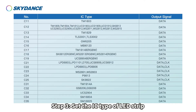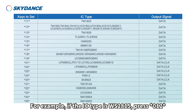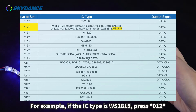Step 3: set the IC type of the LED strip. Press asterisk, plus a double-digit number, plus asterisk on the remote. For example, if the IC type is WS2815, press asterisk 12 asterisk.